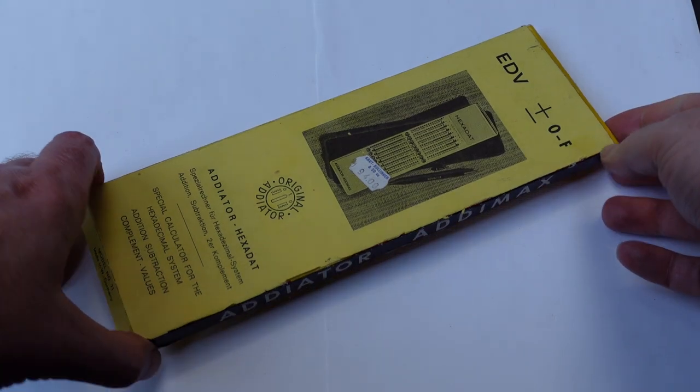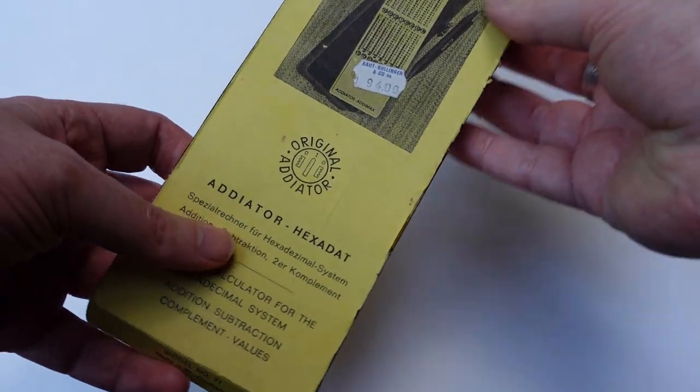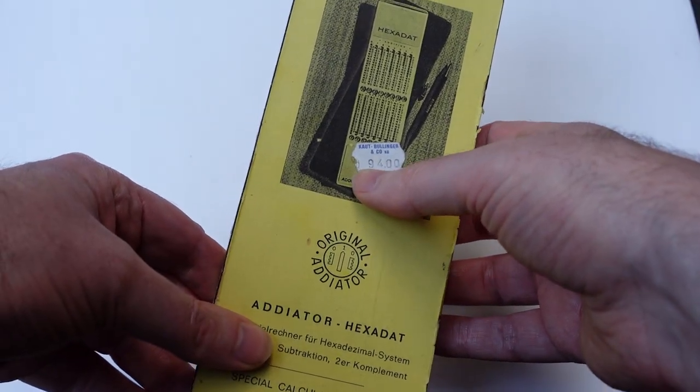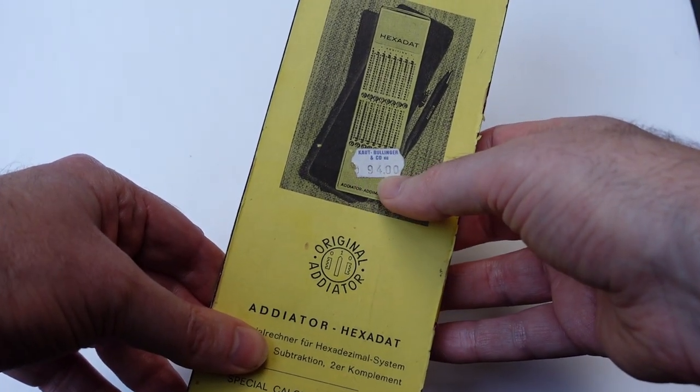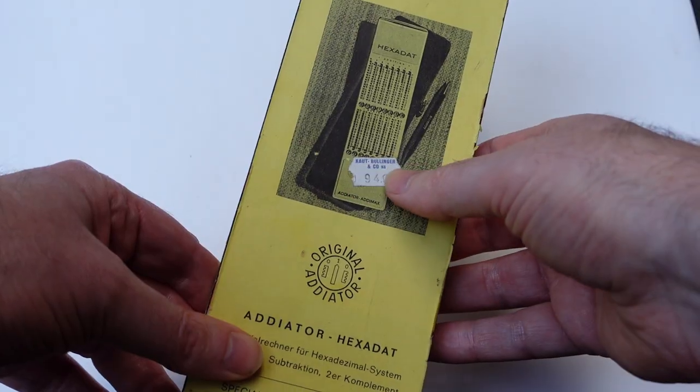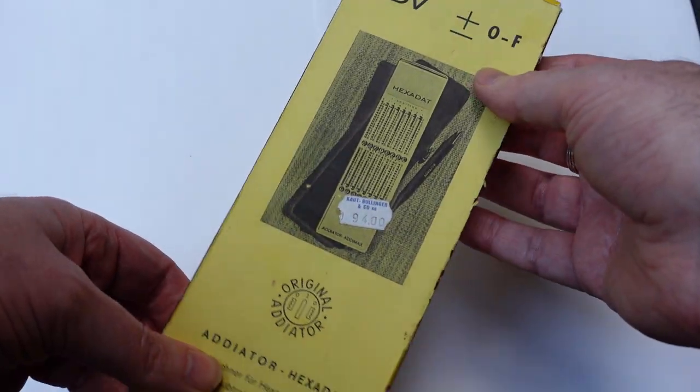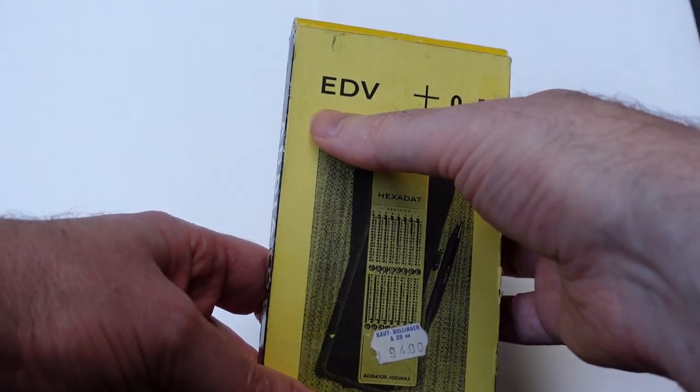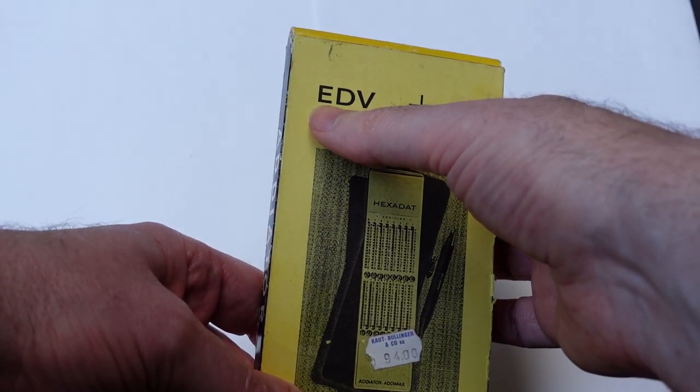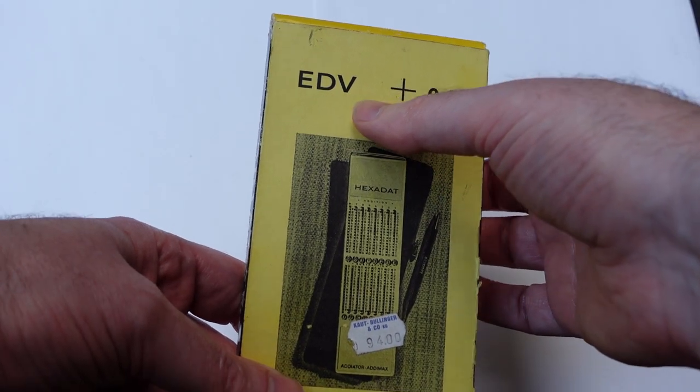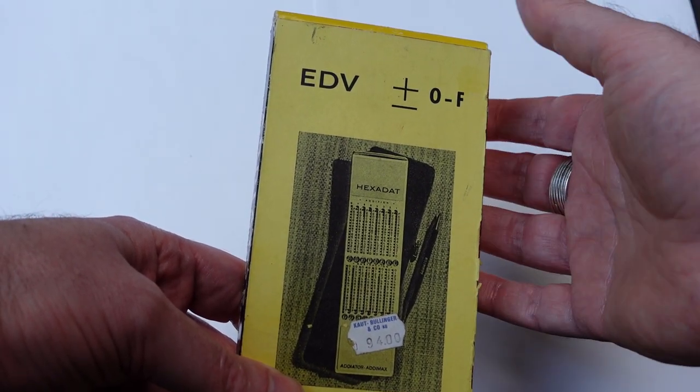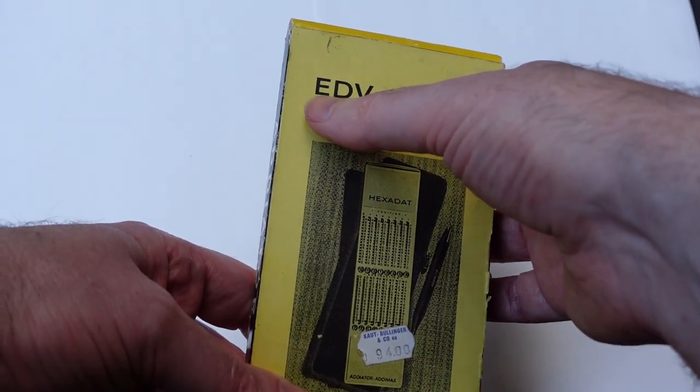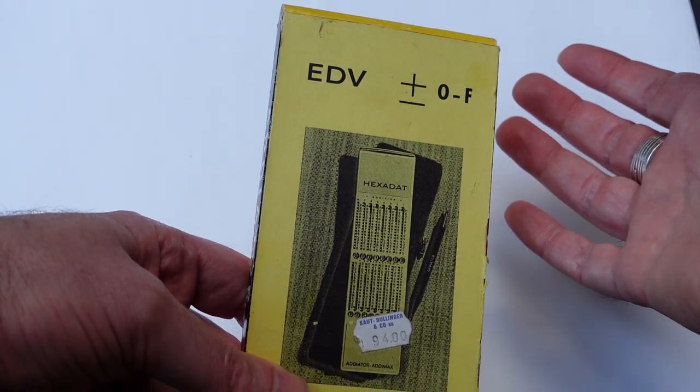Here we have an adiator and it's quite a special one. It has a high price of 94 Deutschmarks and it's from the early 1970s. EDV means Elektronische Datenverarbeitung, which is the German version of electronic data handling or IT.